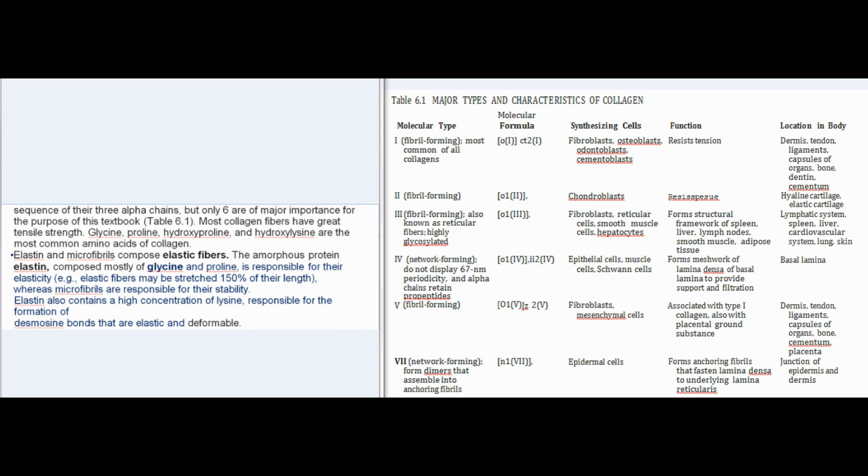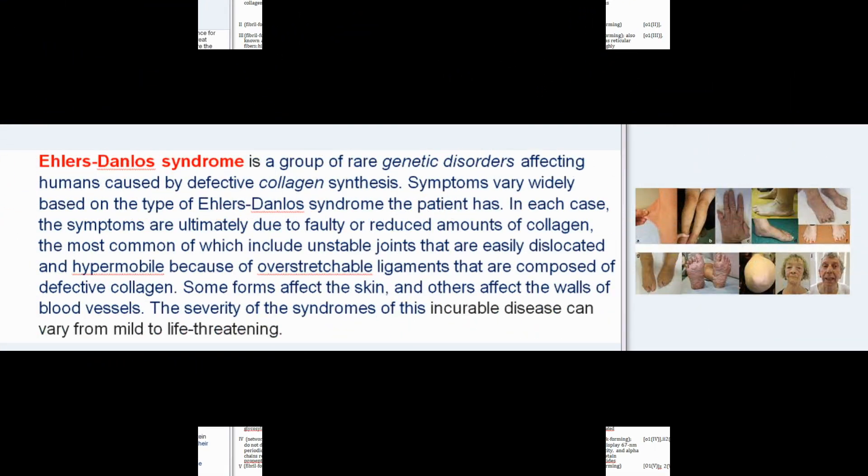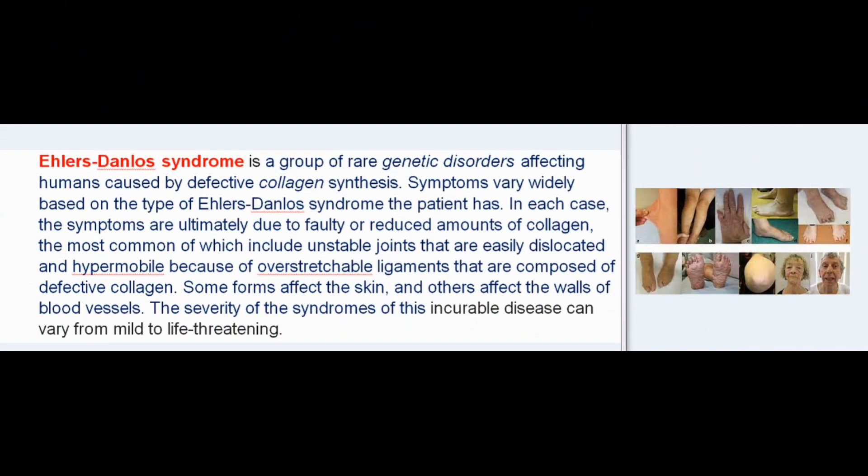Elastin also contains a high concentration of lysine responsible for the formation of desmosine bonds that are elastic and deformable. Ehlers-Danlos syndrome is a group of rare genetic disorders caused by defective collagen synthesis. Symptoms vary widely but are ultimately due to faulty or reduced amounts of collagen, the most common of which include unstable joints that are easily dislocated and hypermobile because of over-stretchable ligaments composed of defective collagen.